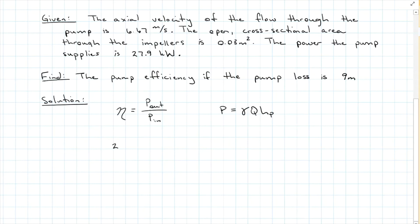We were given power at 27.9 kilowatts, and our specific weight of water is 9,810 newtons per meters cubed. Our flow rate we don't have, so let's calculate flow rate. Q will be VA, because this is water incompressible, so we can use just the VA equation. The velocity we're given is 6.67 meters per second, and our cross-sectional area was 0.03 meters squared. So that gives us a flow rate of 0.2 meters cubed per second.